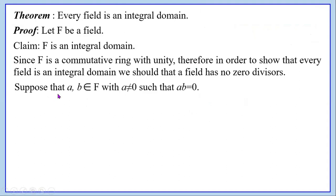Suppose a, b belong to f, where f is a field, with a ≠ 0, such that a·b = 0. We know that whenever a·b = 0, either a = 0 or b = 0. Now we have assumed a·b = 0 and a ≠ 0. To show that f has no zero divisors, we have to show that a·b = 0 implies b must be zero. So our aim is to show that b = 0. Let us start with a·b = 0.